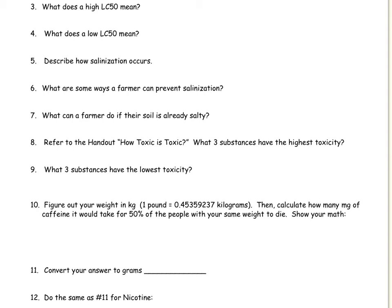For number five, you need to review chapter nine where it talks about salinization. We sticky noted some ways a farmer can prevent salinization. So refer back to that chapter for that. And for also number seven, what can a farmer do if their soil is already salty? It's a good review of salinization for you.